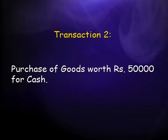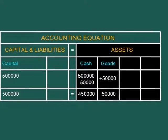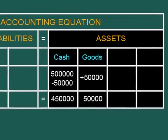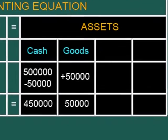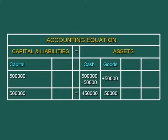Second transaction: purchase of goods worth rupees 50,000 for cash. The two aspects are receipt of goods (an asset) and payment of cash (another asset). Cash decreases by 50,000 to become rupees 4,50,000, while goods come in at rupees 50,000. The total assets remain rupees 5 lakh — cash 4,50,000 plus goods 50,000 — while capital remains undisturbed at rupees 5 lakh. Both sides are equal.